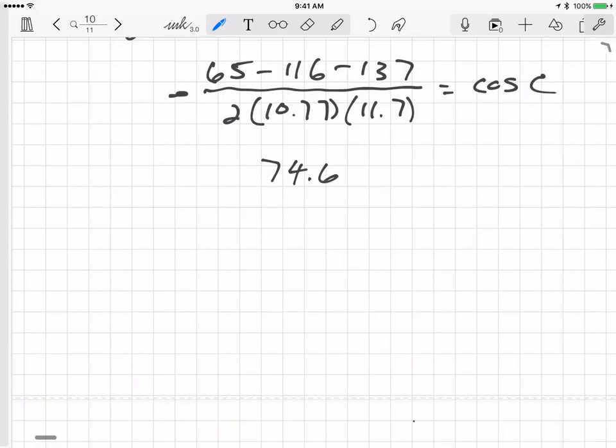So I always double check my calculations, even when I use a calculator. So let me just double check this again. I want to do 65, enter, 116, subtract, 137, subtract. And I want to divide by 2, divide, 10.77, divide, 11.7, divide. And I get 74.59 again. So 10 to the minus 1.